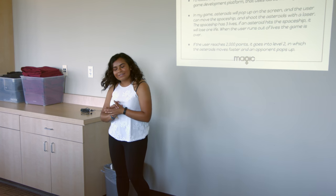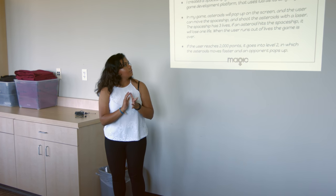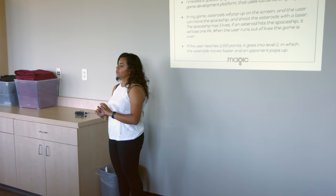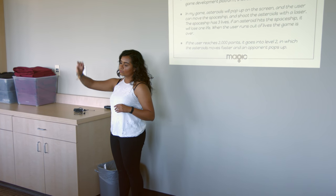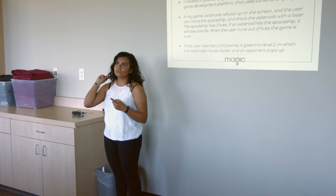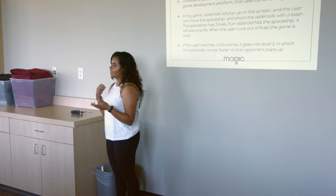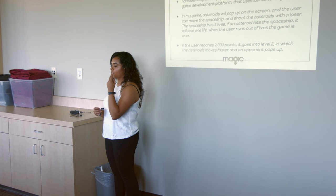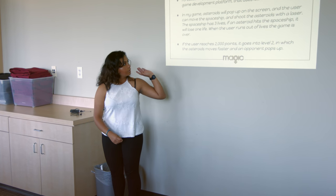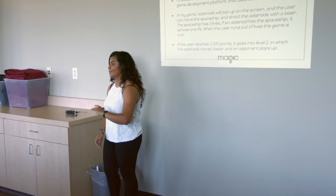I created a spaceship game using Corona SDK, which is a game development platform that uses Lua as its coding language. Basically, in the game the spaceship is at the bottom of the screen and you can move it left to right. If you double-click it, a laser shoots, and there are asteroids coming down. If you shoot an asteroid, you gain 100 points, but if the asteroid hits the spaceship, you lose a life — the spaceship has three lives. We also implemented a level two: when the user reaches 2,000 points, it goes to level two, the asteroids move faster, and an opponent appears.